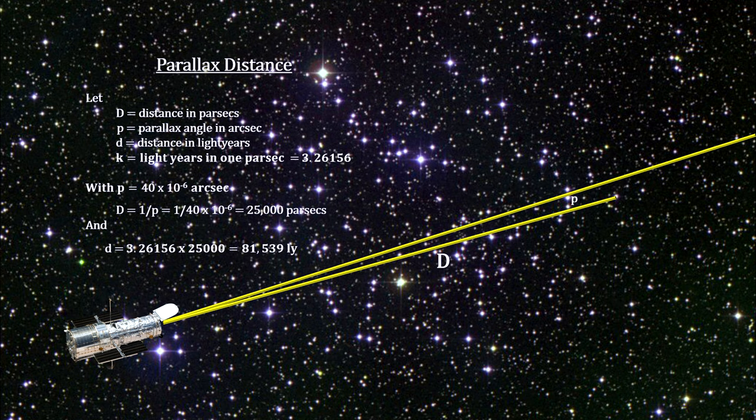This is close to what the Gaia satellite can do and has enabled Hubble to measure distances to the stars out to the Milky Way halo.